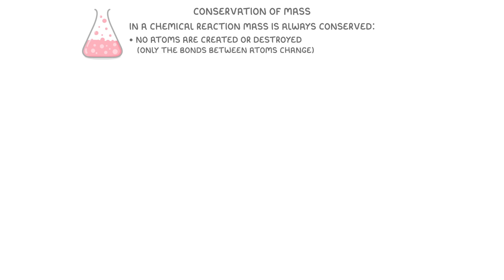One of the most important concepts in chemistry is the idea of conservation of mass, which means that in a chemical reaction, mass is always conserved, or in other words, no atoms are created or destroyed. It's only the bonds between atoms that change.